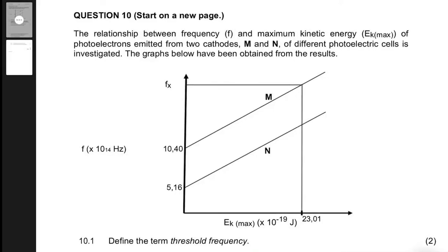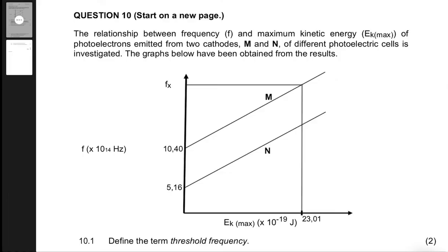The relationship between frequency and maximum kinetic energy of photoelectrons emitted from two cathodes M and N of different photoelectric cells is investigated. The graph below has been obtained from the results.